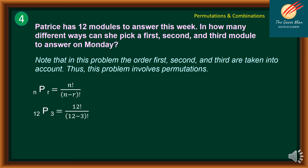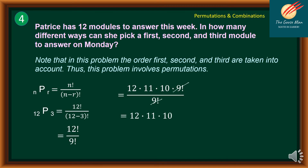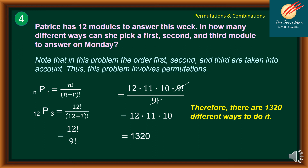Using the formula nPr equals n factorial all over n minus r factorial, we substitute to get 12 factorial all over 9 factorial. Expanding: 12 times 11 times 10 times 9 factorial all over 9 factorial. Factoring out 9 factorial, we have only 12 times 11 times 10, which equals 1,320. Therefore, there are 1,320 different ways to do it.